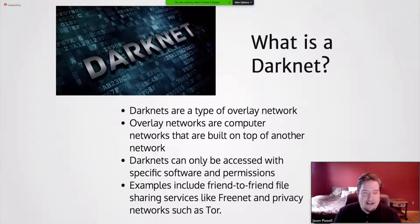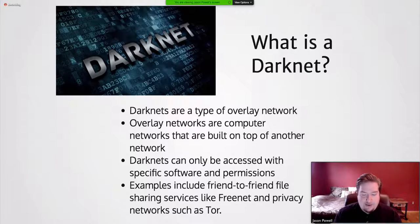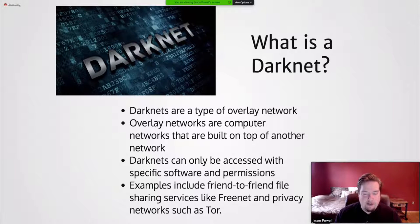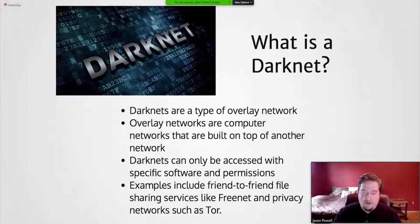A dark net is a type of overlay network — computer networks built on top of another network. Examples include distributed systems such as peer-to-peer networks and client-server applications, defined that way because their nodes run on top of the internet. Dark nets can only be accessed with specific software and permissions. Examples include friend-to-friend file sharing services like FreeNet, and privacy networks like Tor. The term dark net was coined in the seventies to designate networks isolated from ARPANET, which eventually evolved into the internet.